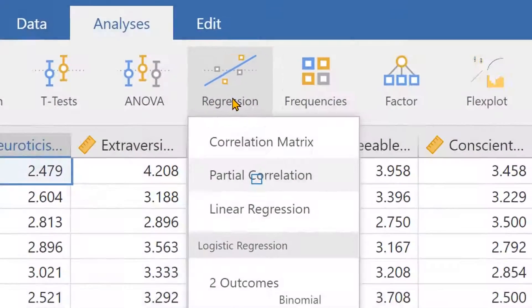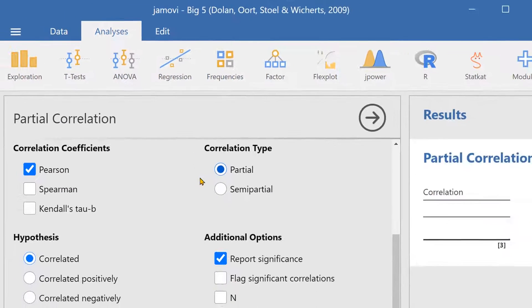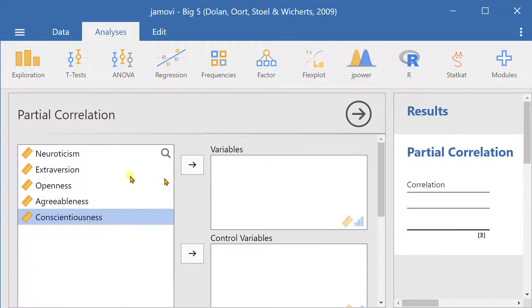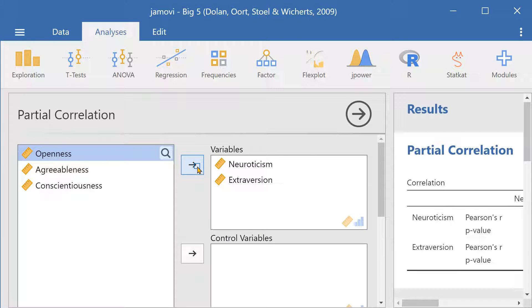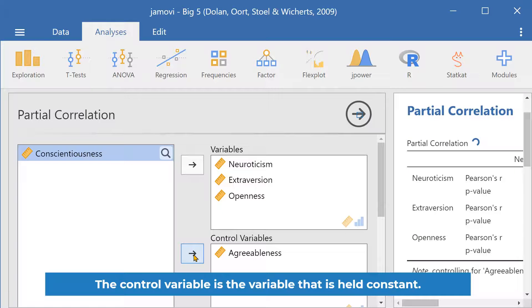To start off, let's go to regression, then partial correlation. You can see partial correlation has already been selected. Let's slide in the variables. I'll slide in three, and then for the control variable, I'll slide in agreeableness.